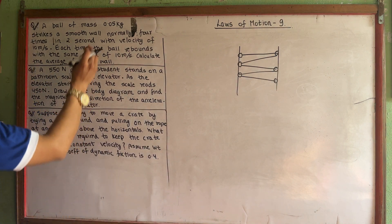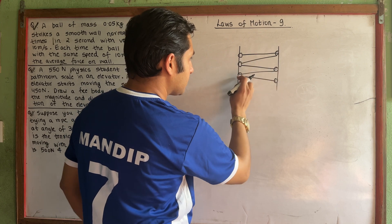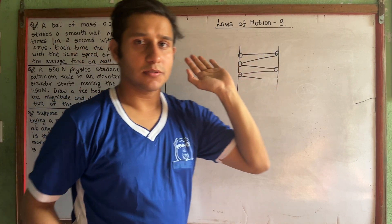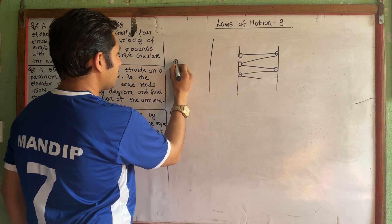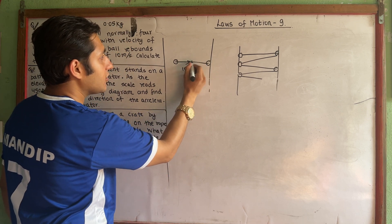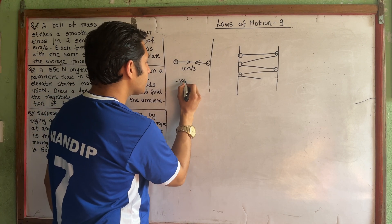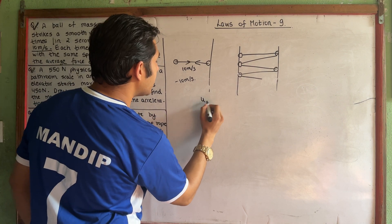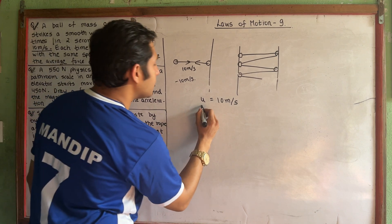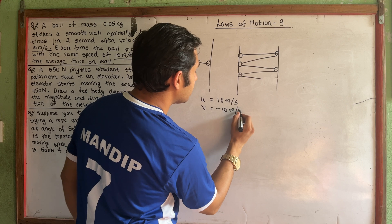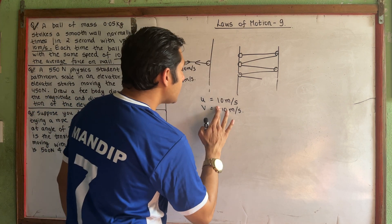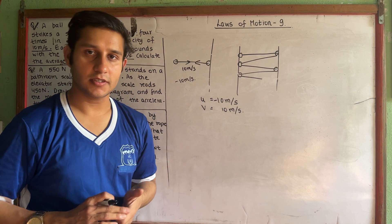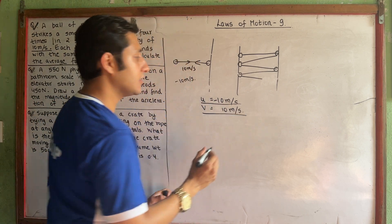The ball strikes 4 times — 1, 2, 3, 4. The velocity is 10 meters per second. It will come from u minus v, or v plus u. In the beginning it will be plus. So u is minus 10 and v will be equal to plus 10. This is clear.